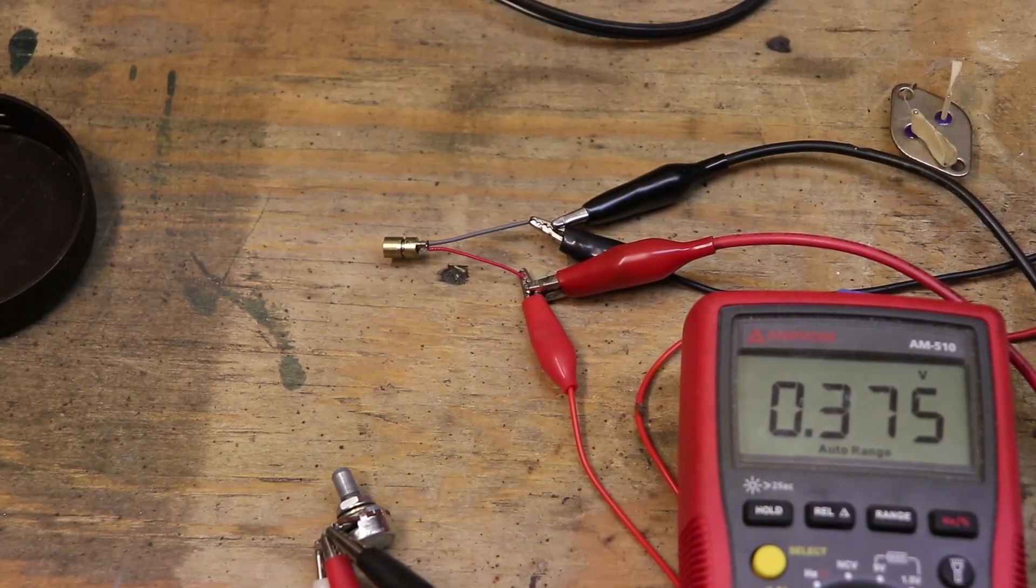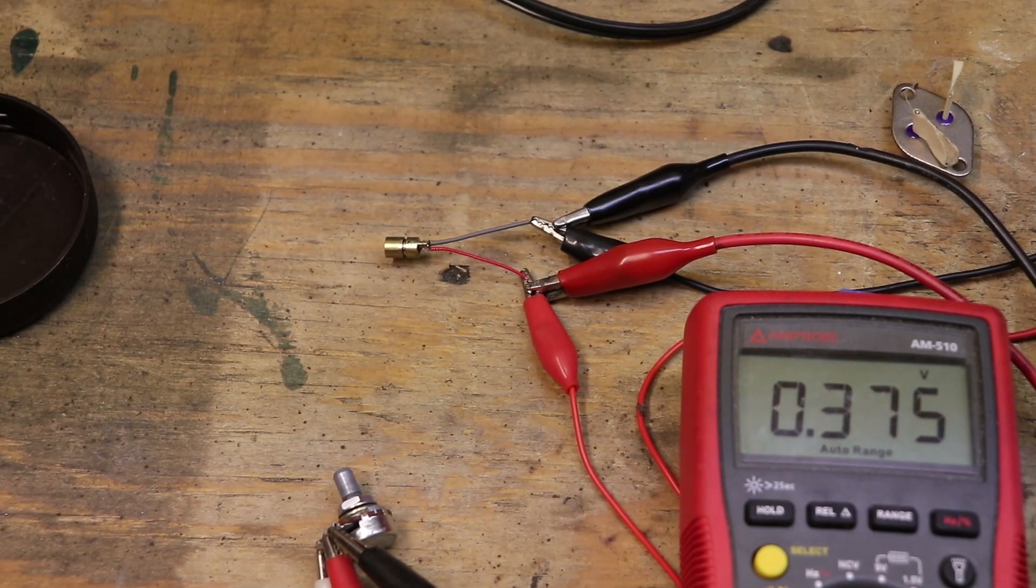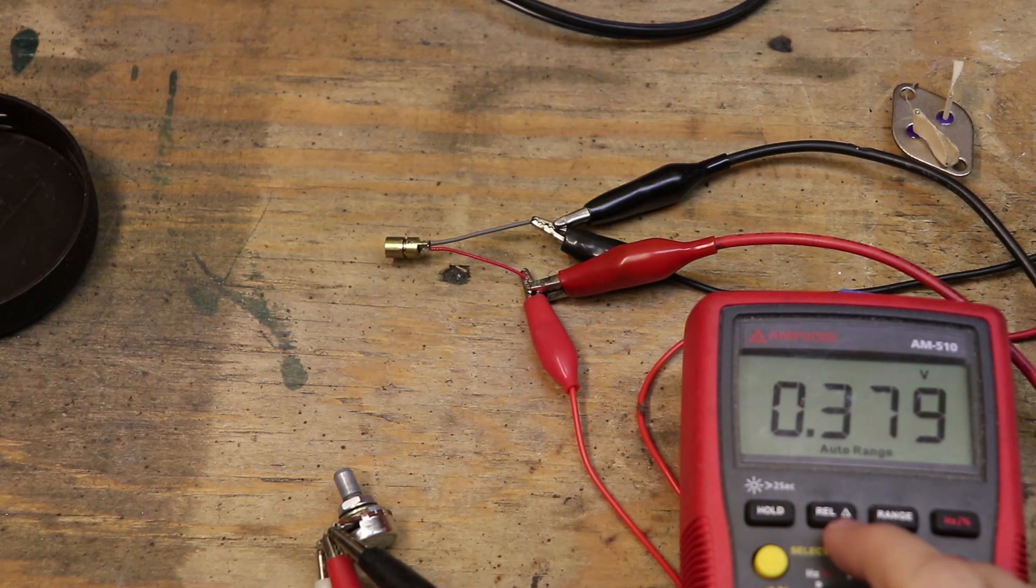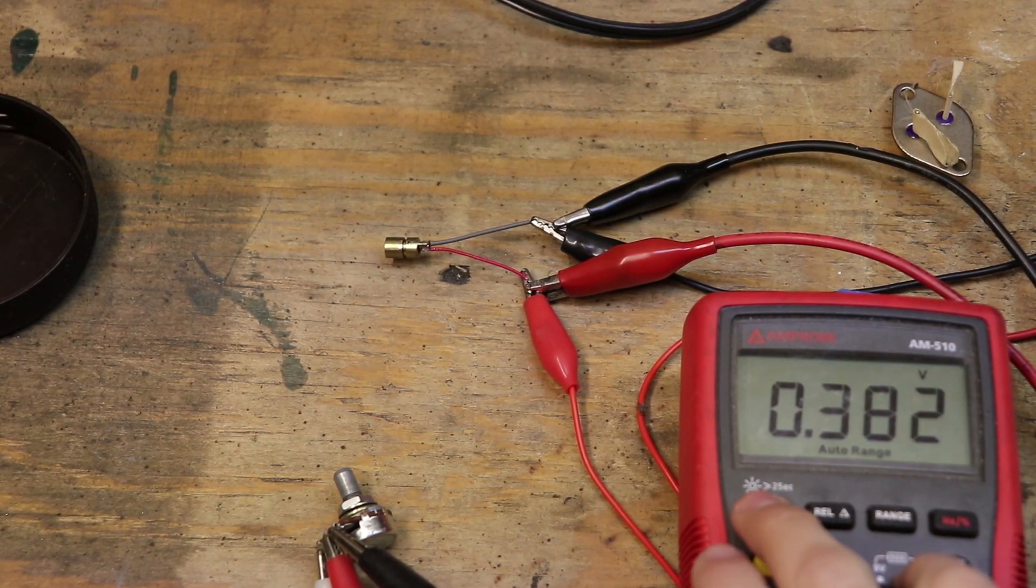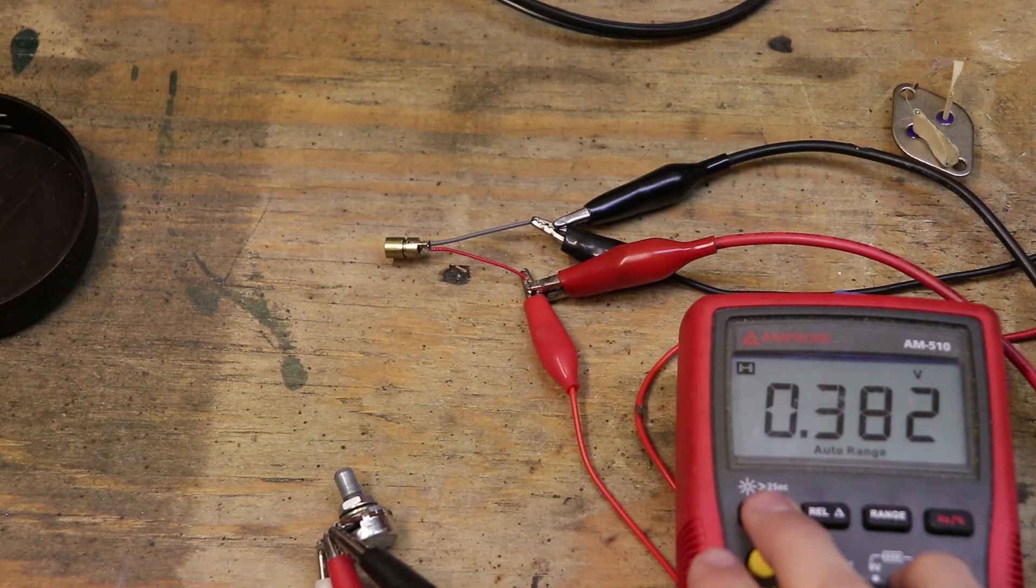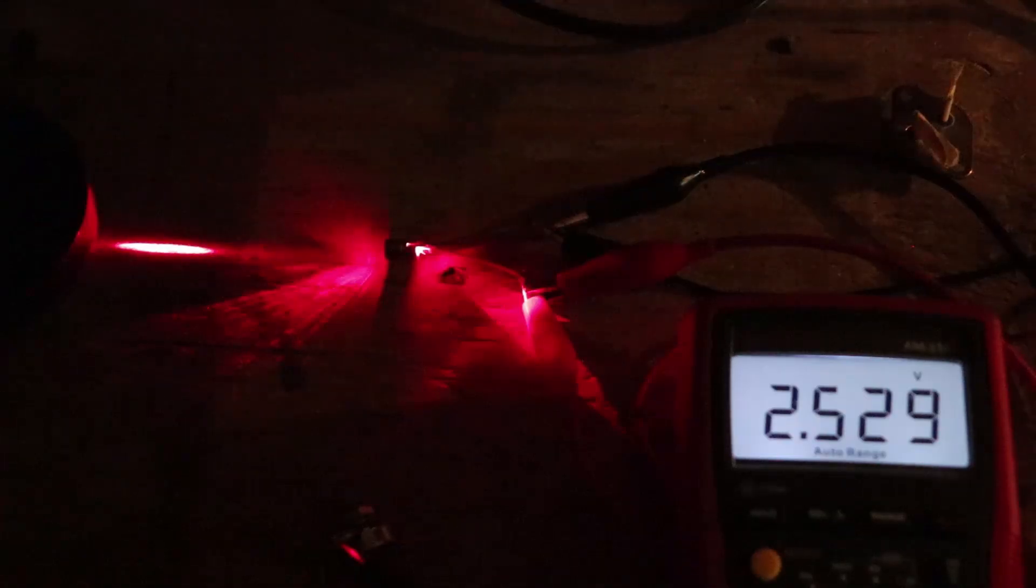I'm actually going to turn off the lights for this so you can see the laser much better. It's cool because this multimeter has a setting where you can turn on the backlight. So there we go, the laser is fully powered and we're at 2.5 volts and we can be certain that we are under 300 milliamps.